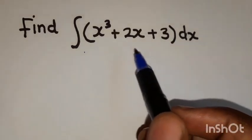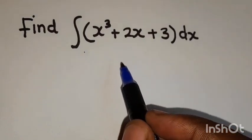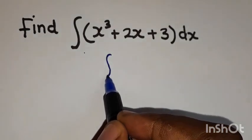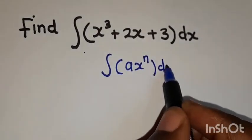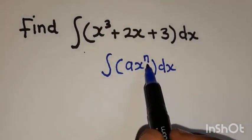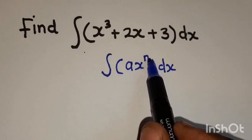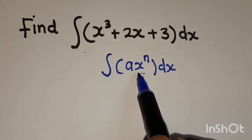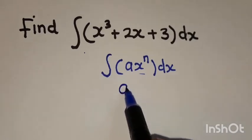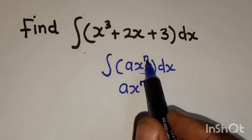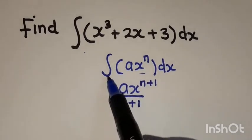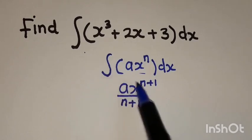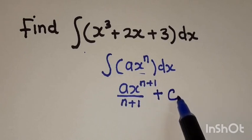Alright, so first of all, what does it mean when they say integrate? For example, if you have a function ax to the power n and you've been told to integrate this function, it means that you are going to add a 1 to the power n and then divide everything by the new power, which is n plus 1. So this is going to be ax to the power n plus 1, divided by n plus 1. And because this integral has no limits, you are going to put a constant — plus c.